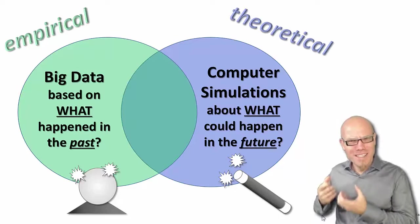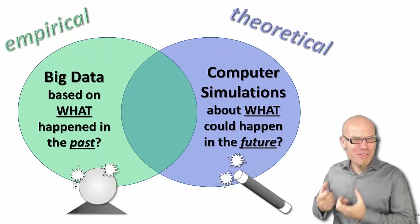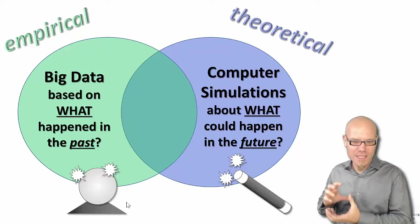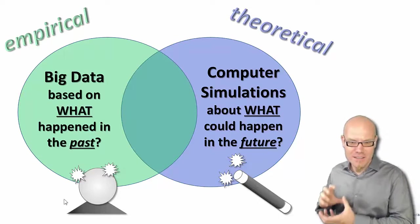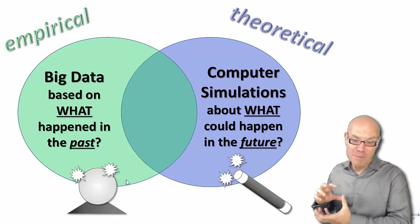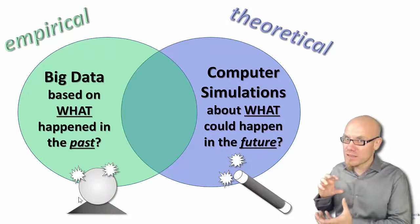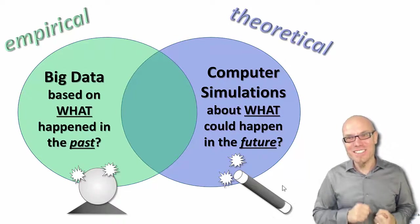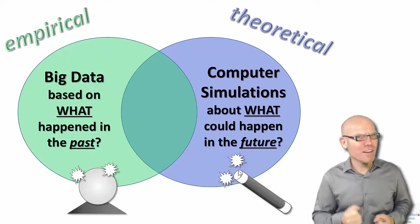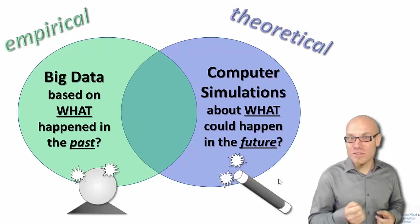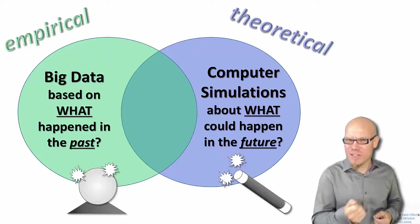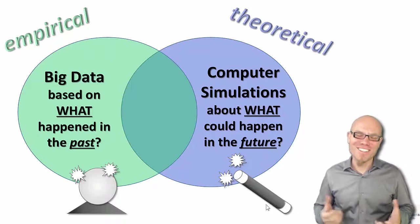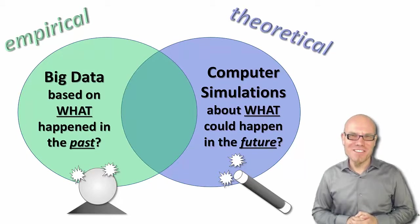Sometimes I call big data, the empirical forecasting of history, the digital crystal ball because it's kind of deterministically telling us how the future will happen under the assumption that it is very similar to past history. And computer simulations, theoretical work, the digital magic wand because it allows us to explore scenarios that never happened, and we can change the course of history just by swinging our magic wand. So that's how you can think about these two legs.